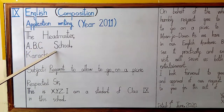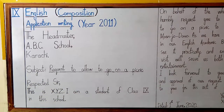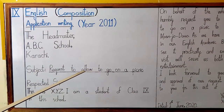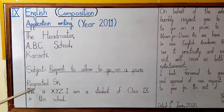Then we will skip one line and start the subject. 'Subject: Request to allow to go on a picnic.' Your subject should be as short as possible. You can take the subject from the question. You don't need to add 'him' or 'your class' — just 'Request to allow to go on a picnic.' Then skip one more line before and after the subject. You have to strictly follow the capitalization, spelling, and punctuation marks to avoid common errors.